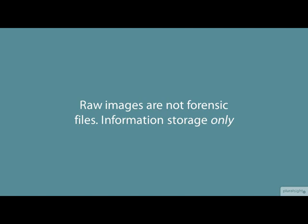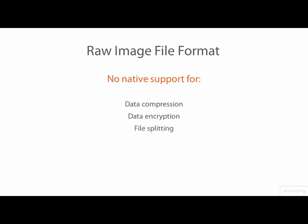The raw image format is not a forensic image file format. Raw image files are for information storage only, and by themselves do not provide features for ensuring confidentiality, integrity, or identification of the information they store. Tools may be used on raw files to reduce their size, to hide their contents, split them into multiple pieces for convenience and handling, protect them from unauthorized access, and provide tamper-evident verification, but the raw image format itself does not natively support these capabilities. Because of this, the use of forensic image formats over simple raw image files is considered to be a more forensically sound and preferred practice.